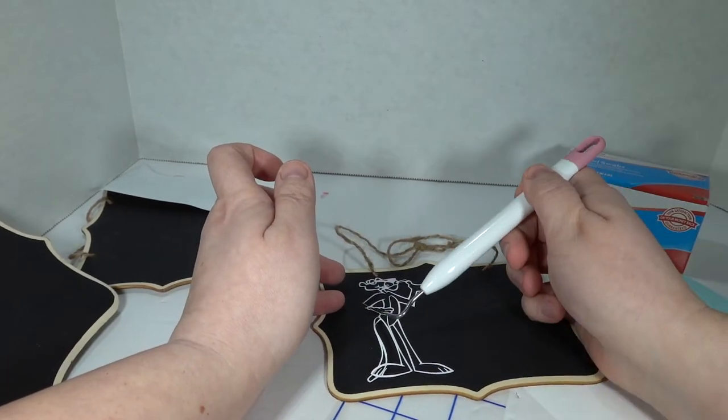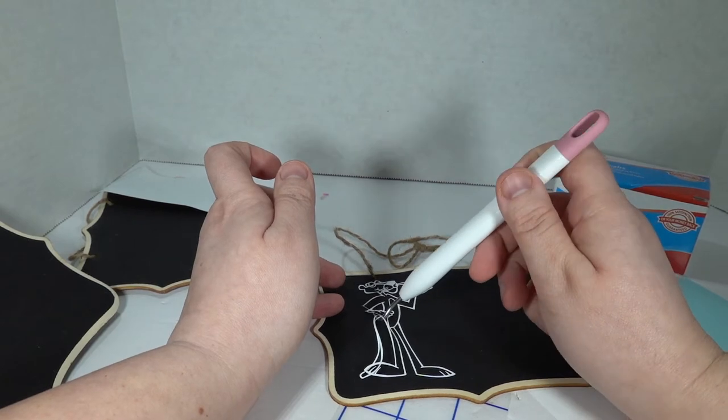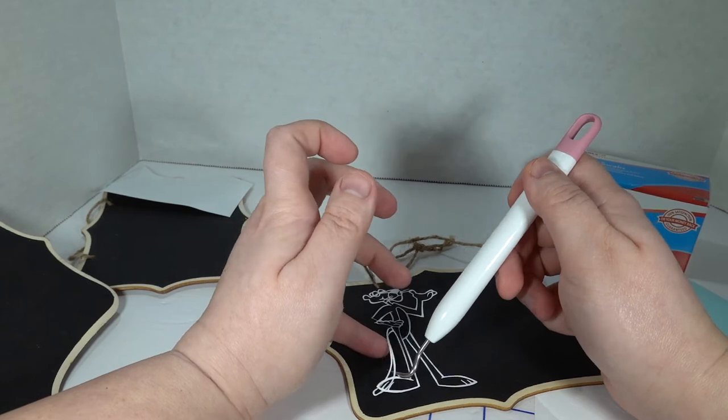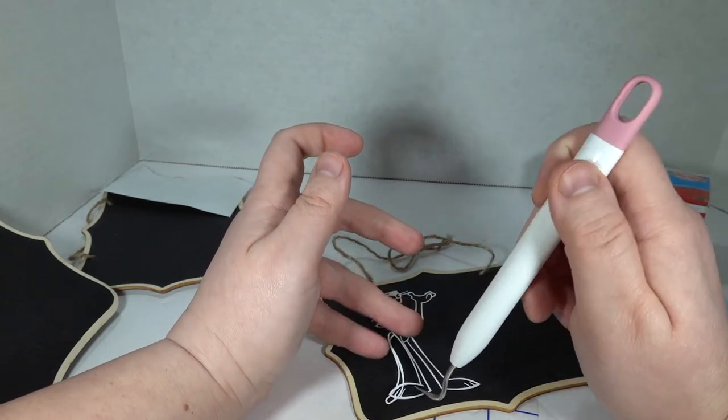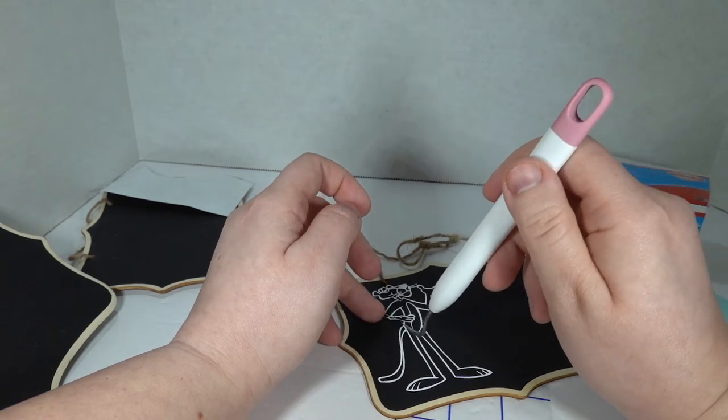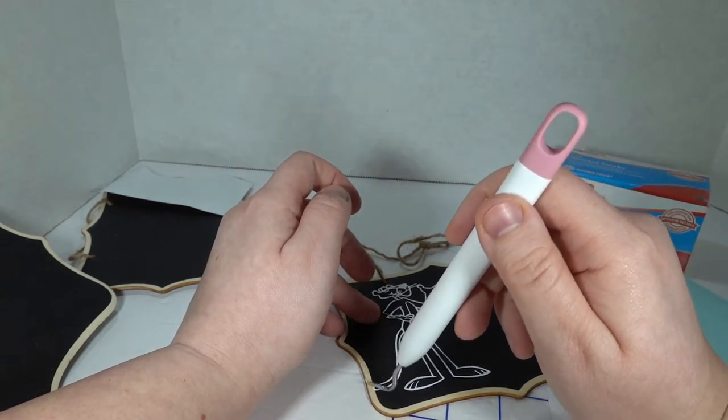I'm just going to try and carefully use my weeding tool here to kind of lift and separate and kind of get him where he makes sense. We'll see how it works out. Hopefully, I don't rip anything. Okay, I got that tail separated.